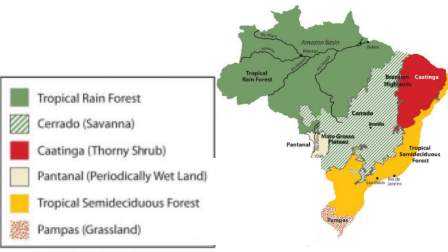Another South American country with an important forest resource is Brazil. The map shows the main vegetation areas of Brazil. Tropical rainforests located to the northwest occupy the largest area of vegetation. To the immediate south or southeast of the tropical rainforest is the Cerrado.